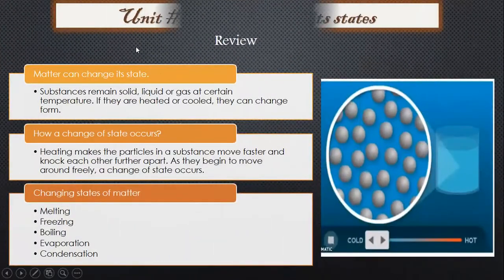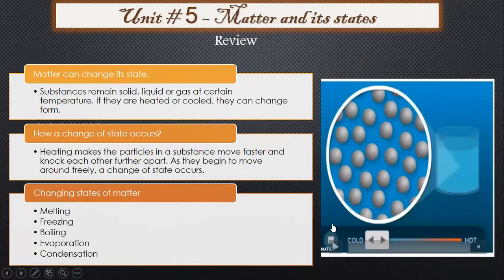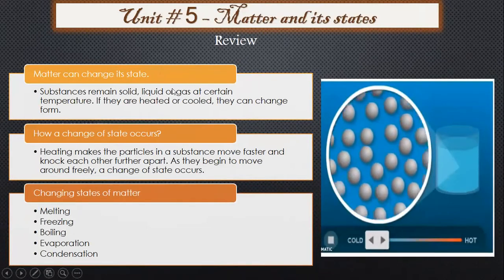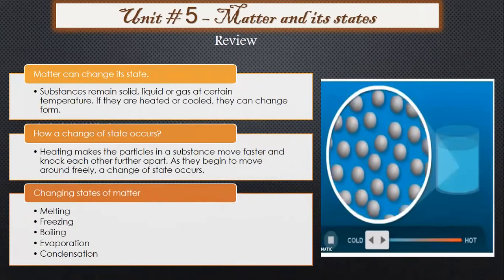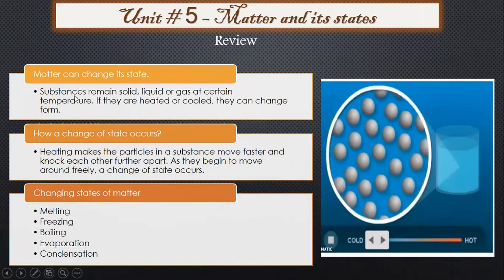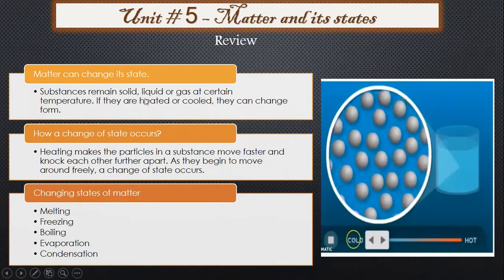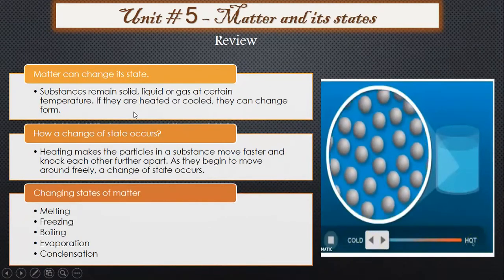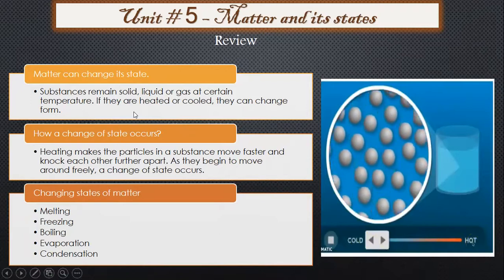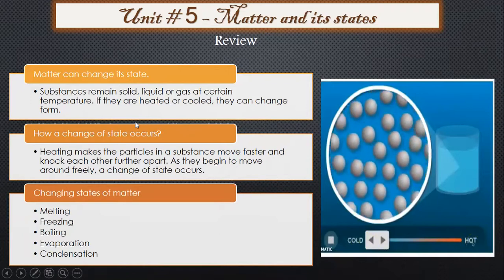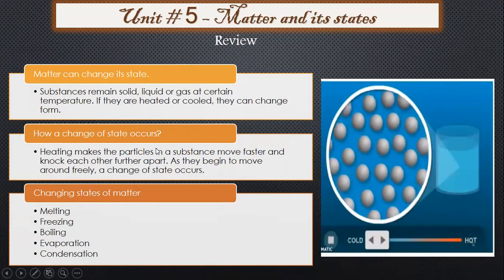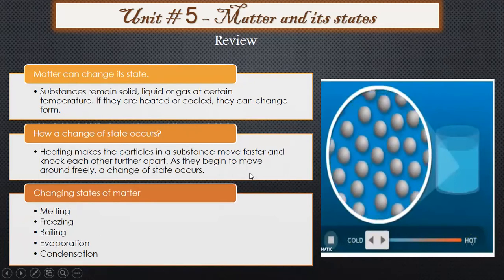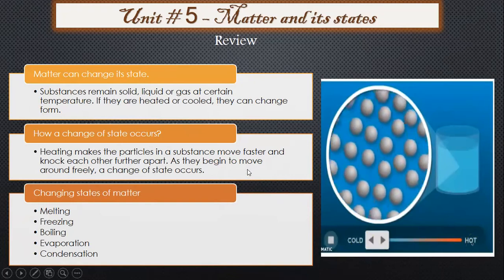Matter can change its state. A simple experiment uses an ice cube — after some time it starts melting. A substance exists as solid, liquid, or gas at a certain temperature. If heated or cooled, it can change form. Heating makes the particles in the substance move faster and knock each other farther apart, and as they begin to move around freely, a change of state occurs.